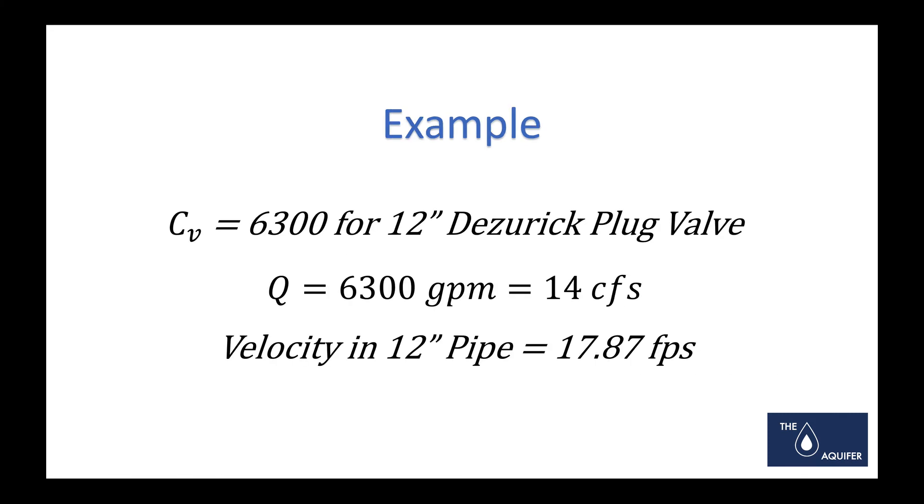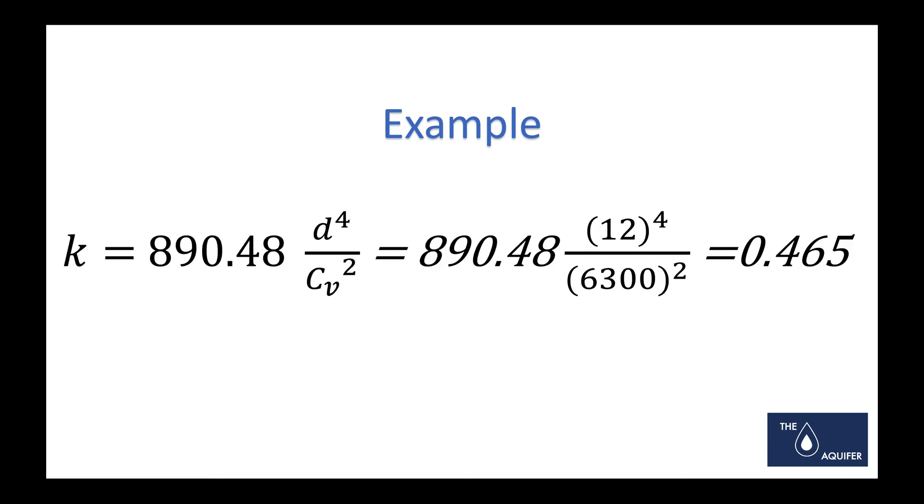I'll provide you with a little bit of an example here. Let's say we're working on a 12-inch Dezurik plug valve and they give us a Cv of 6300. Well, the 6300 gallons per minute equates to 14 cfs in a 12-inch pipe, and the velocity in that pipe would be 17.87 feet per second. As you can tell, these are pretty high for a normal pressure pipe system that we might do in a municipal water/sewer application.